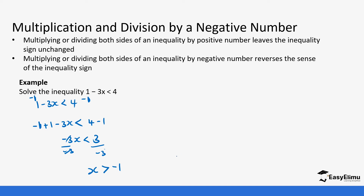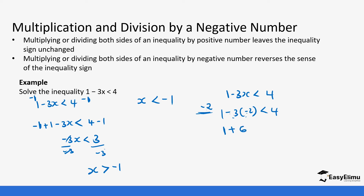If we do not change the sign, then our statement becomes false. Let's say we retain x is less than negative 1. If x is less than negative 1, we pick a value less than negative 1 — let's take negative 2 for example. Putting it in our equation, 1 minus 3 times negative 2 is less than 4. This gives us 1 minus minus 6, which is 1 plus 6 equals 7, and 7 is less than 4 is not true. That is the reason why every time we divide by a negative number, the sign must change.